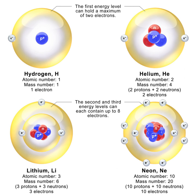In nuclear fission, the absorption of a neutron by a heavy nuclide causes the nuclide to become unstable and break into light nuclides and additional neutrons. The positively charged light nuclides then repel, releasing electromagnetic potential energy. The neutron is classified as a hadron, because it is a composite particle made of quarks. The neutron is also classified as a baryon, because it is composed of three valence quarks.